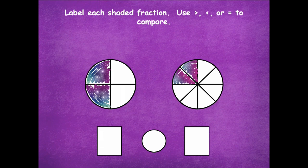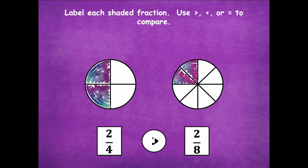My first fraction has four equal parts and two are shaded, so that's two fourths. My second circle has eight equal parts and two are shaded, so that's two eighths. They both have the same numerator, but I can easily see on my drawing that two fourths is greater than two eighths — remember, the more parts there are, the smaller the parts get.